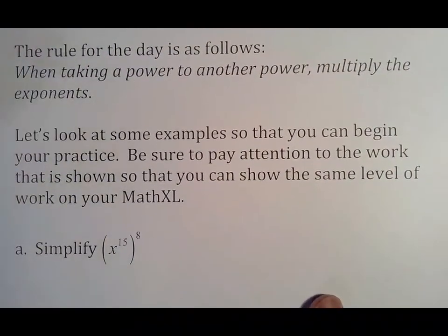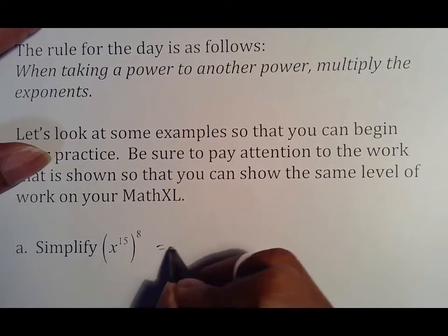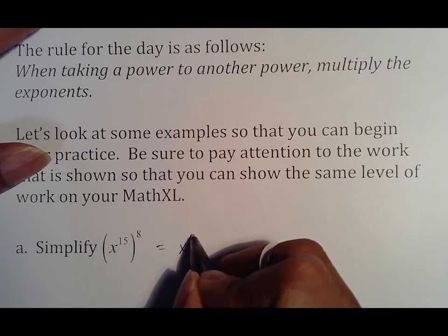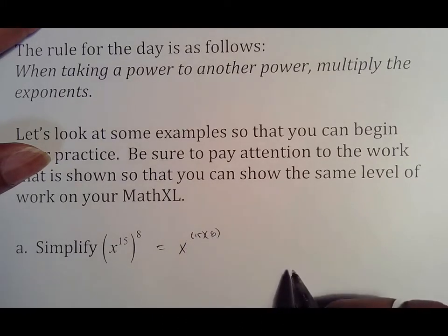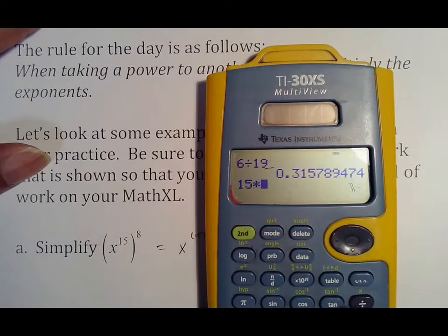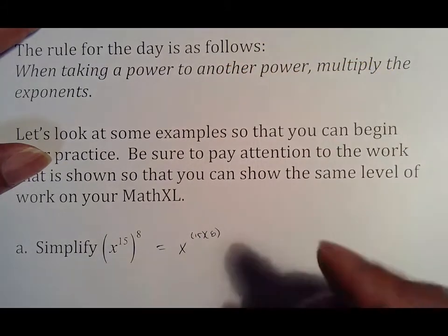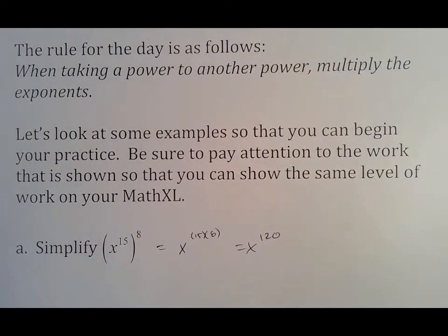If you're looking at x to the 15th to the eighth, I see 8 separated from 15 by parentheses, which means it equals x to the 15 times 8, not plus 8. That would be the stuff that we did before. So 15 times 8 is 120, which is what I end up with. That's the first step: recognizing it.